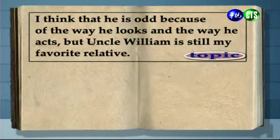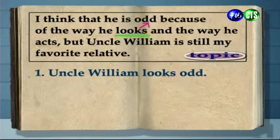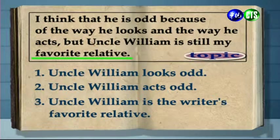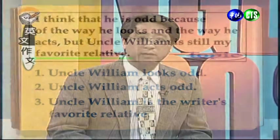You can see that there are three points about Uncle William being made in the thesis statement. 從這個主旨陳述之中，各位同學可以發現三個關於威廉叔叔的重要重點。The first is that Uncle William looks odd. 第一點，威廉叔叔看起來很古怪。The second is Uncle William acts odd. 第二點，威廉叔叔行事也很古怪。The third point is Uncle William is still the writer's favorite relative. 第三點，威廉叔叔仍然是作者最喜歡的親戚。